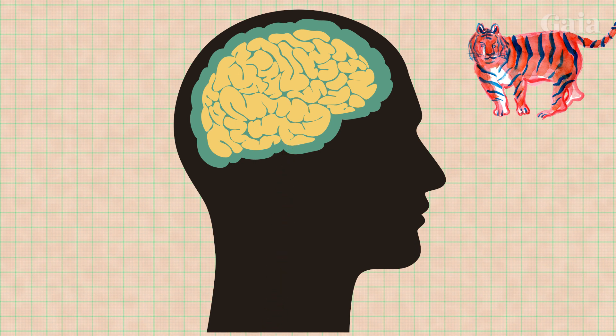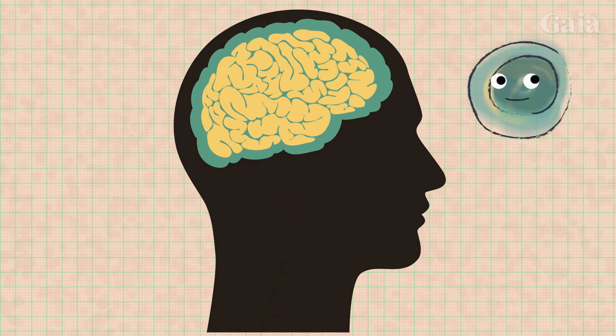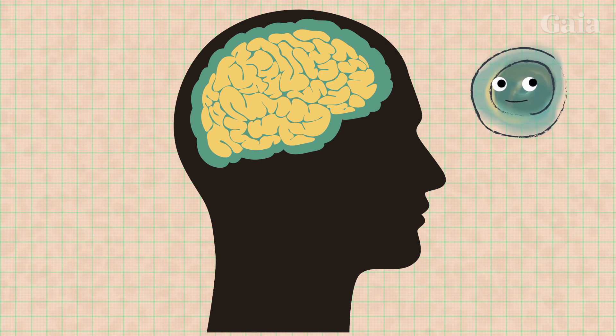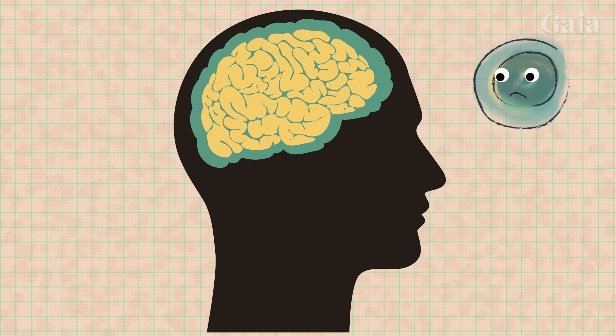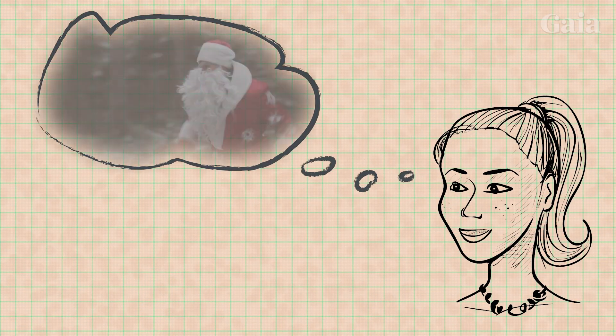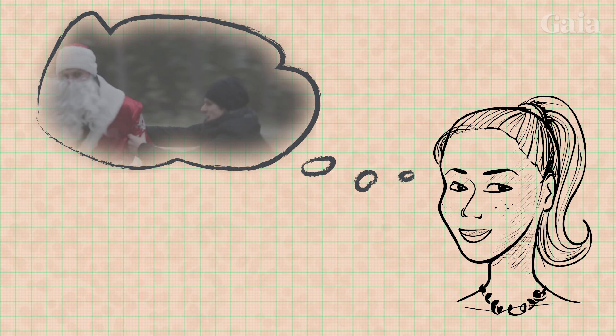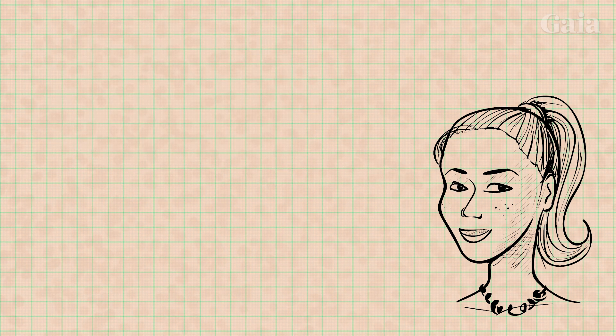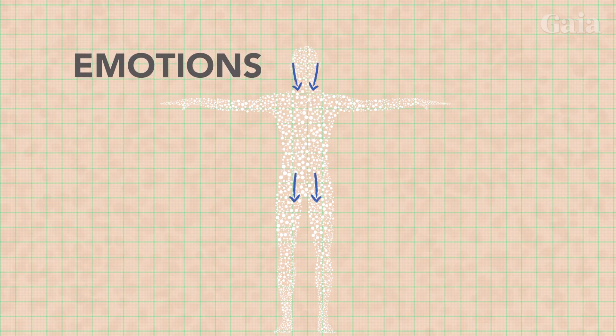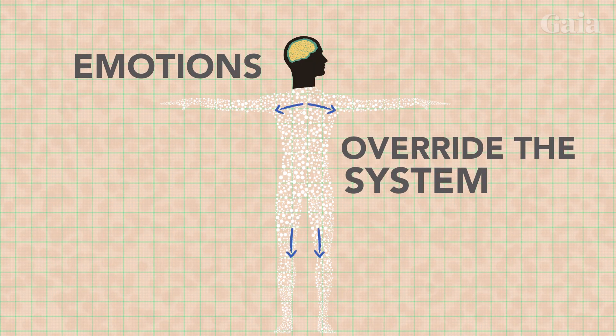This was great for organizing the flow of signal molecules that regulate the cells' behaviors. But it also meant that individual cells had to relinquish control to the brain. And as proud owners of these brains, we can all attest that sometimes our mind generates emotions that are unrelated to our environment and definitely not necessary for our survival. And these emotions are so strong that they have the ability to override the system.